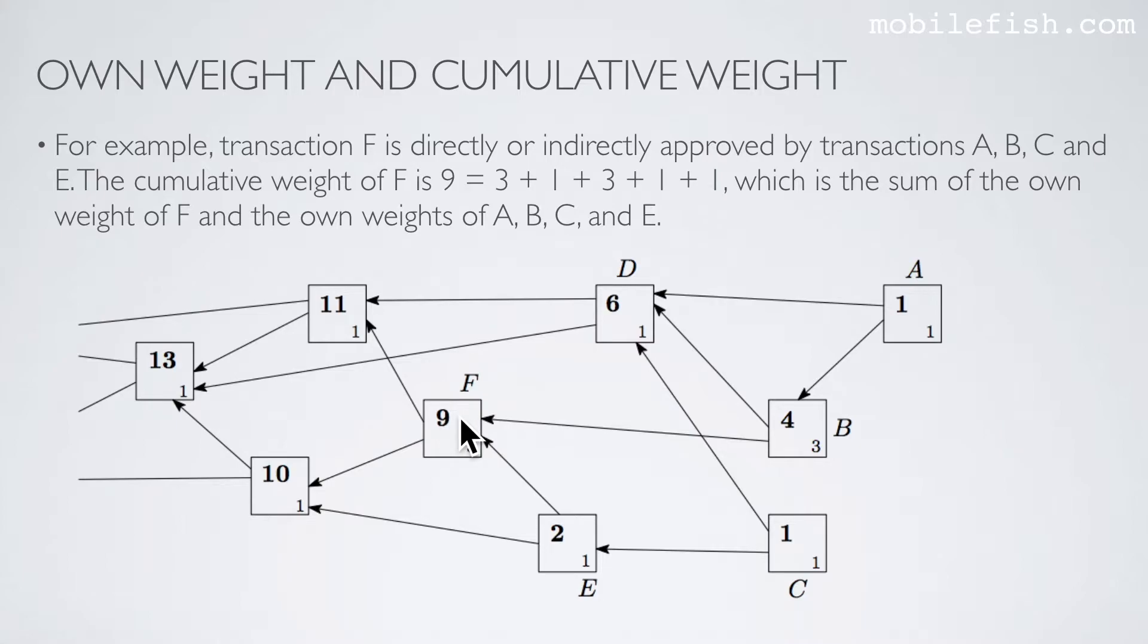The cumulative weight of F is 9, which is the sum of the own weight of F, 3, and the own weights of A, B, C, and E. 3 plus 1 is 4, plus 3 is 7, plus 1 is 8, plus 1 is 9. And that is the value 9.